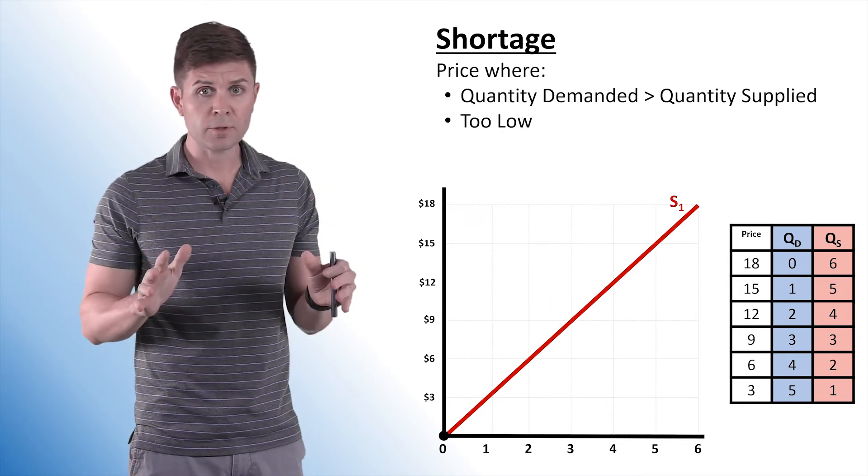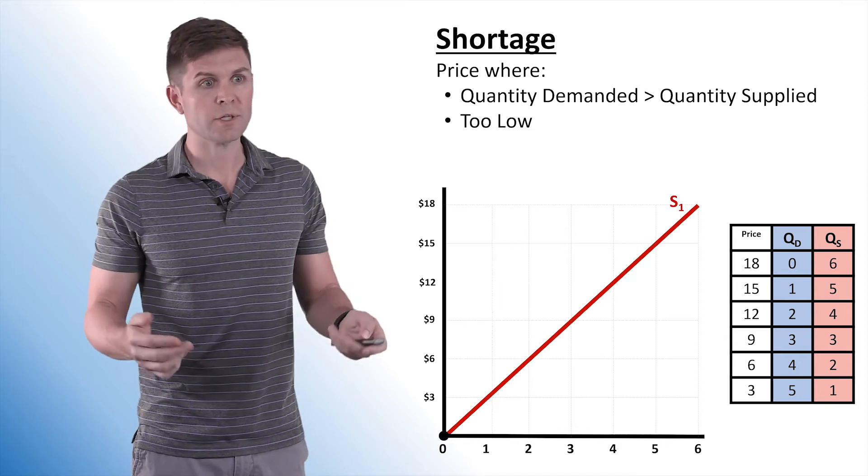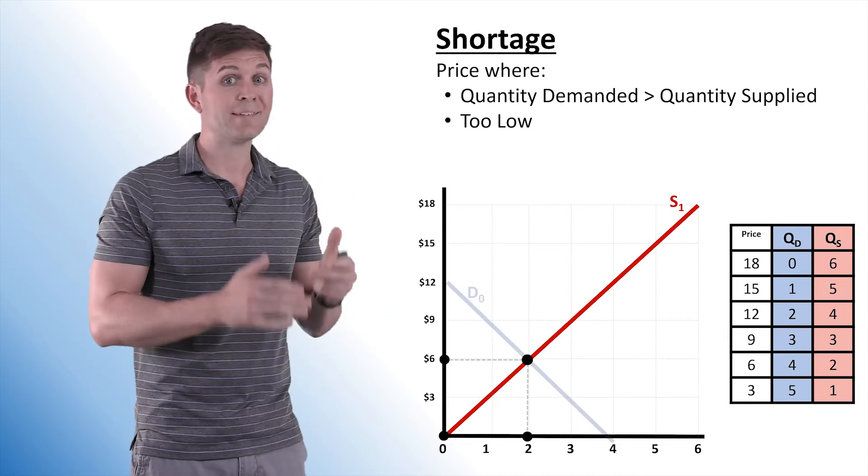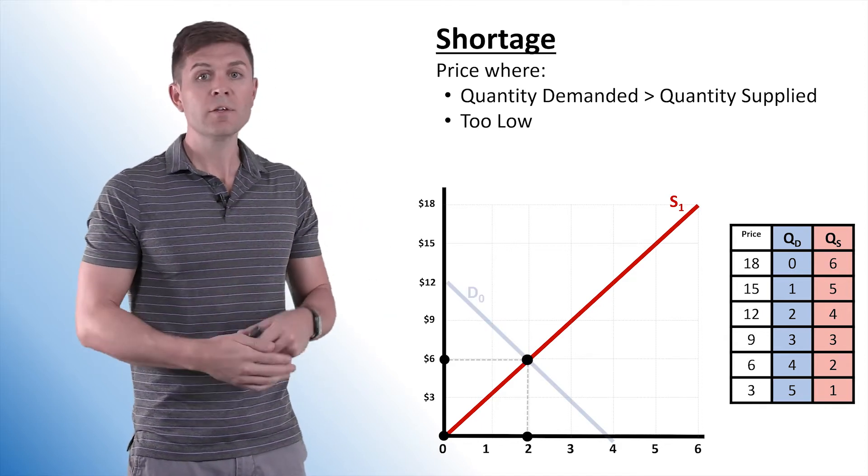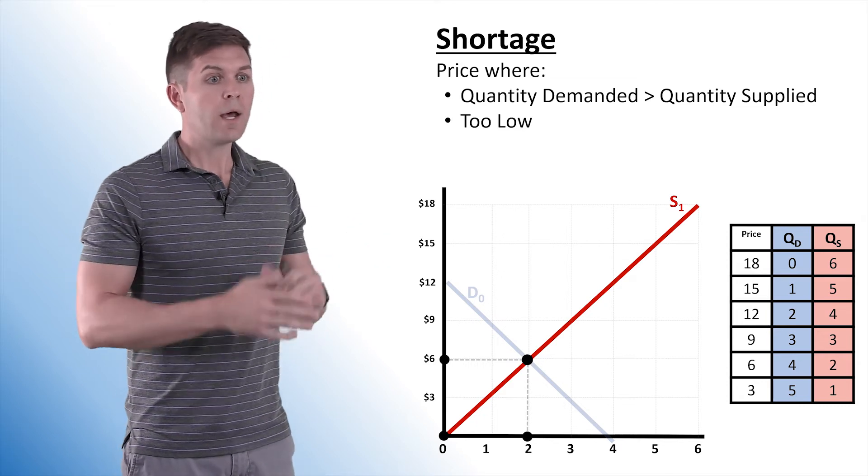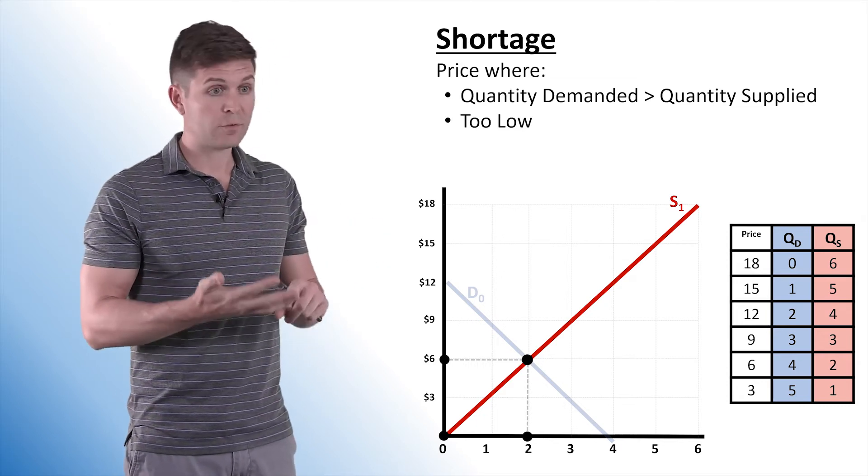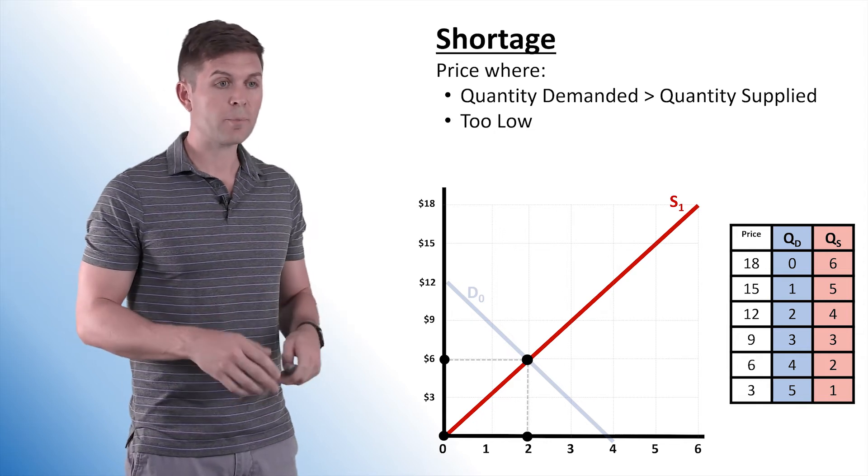Under other circumstances, when price is too low, we end up with a shortage. This means that the quantity demanded is higher than the quantity supplied. So let's start with this original model. At $6, our quantity demanded is two, our quantity supplied is two. We are in equilibrium.